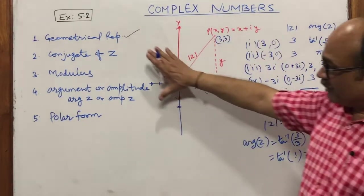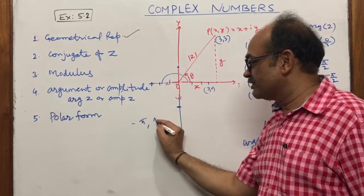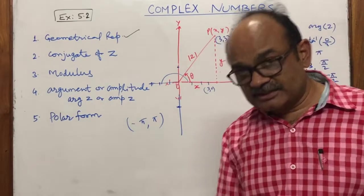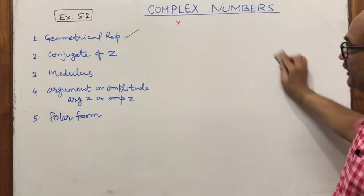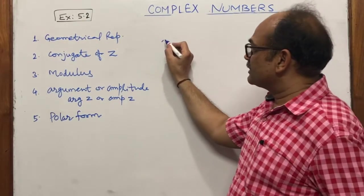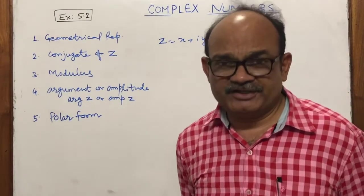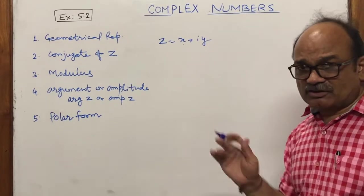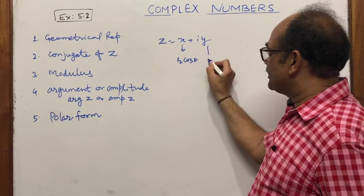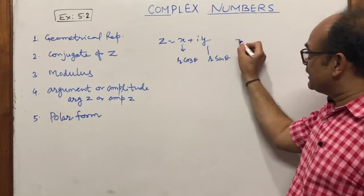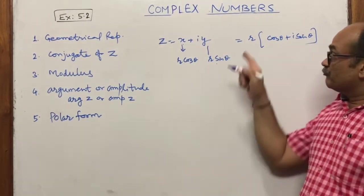So those are the four important points: geometrical representation on the Argand plane, conjugate of z, modulus, and argument. Remember: the principal argument always lies between −π and π. Now we move to the next topic — the polar representation of a complex number. Any complex number z = x + iota·y can be converted into polar form.